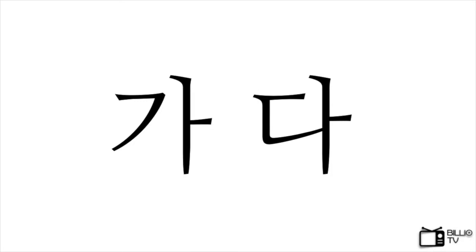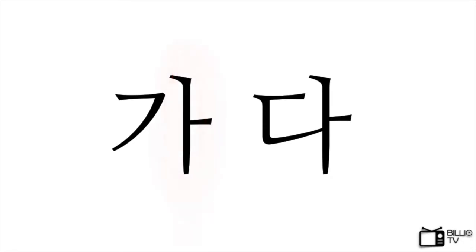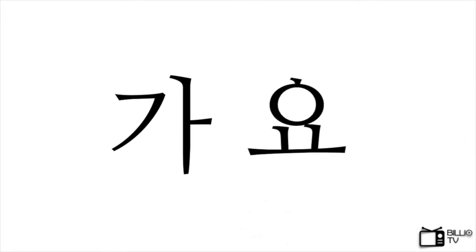This is a verb in infinitive KADA, which means 'to go.' KA is the stem and DA is the ending of the verb. Let's look at the vowel of KA — the vowel is A. When the vowel of the last letter of the stem is A, there is no change of the stem. All we need to do is remove DA and place YO instead. So KADA becomes KAYO.